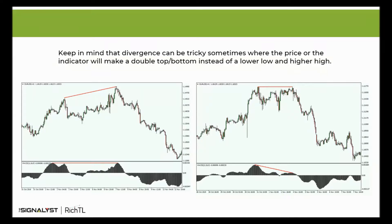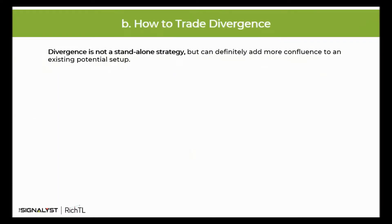Now, how to trade divergence. Divergence is not a standalone strategy but can definitely add more confluence to an existing potential setup. Just like any tool, divergence is not foolproof, so do not make trading decisions based on divergence solely. We recommend using divergence in conjunction with other price action tools like support and resistance, supply and demand, chart patterns, and so on — then your trades would have a higher probability of working out.